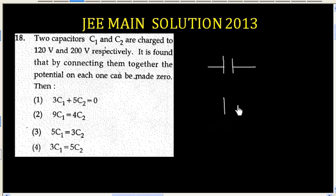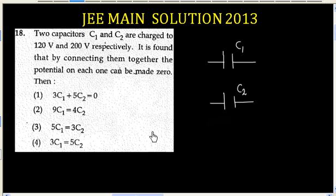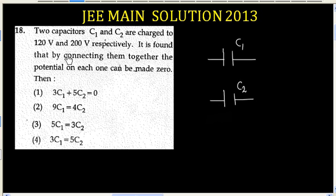So we have two capacitors, C1 and C2. C1 is charged to a potential difference of 120V and C2 is charged to a potential of 200V.